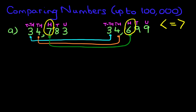Which one is smaller? Is it seven or six? Six is smaller, so the arrow points to six. It does not matter what the remaining digits are because we start on the left-hand side. The ten thousands were the same, the thousands were the same, but the hundreds were different. And that is how we worked out the smaller number and the larger number.